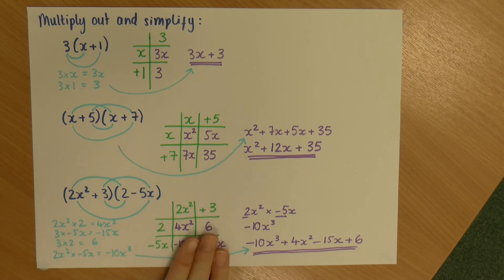So, that is the box method and the smiley face method. You can absolutely use whichever you like. And maybe there's a method that you prefer that I haven't mentioned. But that is us multiplying out and simplifying.